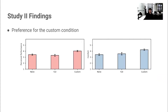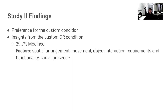Here are two key findings from our second study. First, the graphs on this slide summarize participant ratings for perceived performance and comfort under each condition. Our Friedman test showed a significant main effect of the diminished reality condition, and post-hoc tests revealed a significant preference for the custom condition compared to the other two conditions for both metrics. This indicates that users are potentially open to applying diminished reality to create more comfortable, personalized visual environments if given the capability to do so easily. On average, participants applied diminished reality augmentation to 29.7% of modifiable objects. Factors they considered include the spatial arrangement of objects, the amount of movement required, object interaction requirements and functionality, and the amount of social presence.